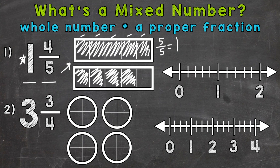Let's place this mixed number on a number line. We'll start by finding one whole, which is right here. Then we need the four fifths: one fifth, two fifths, three fifths, and four fifths. So we would place one and four fifths right here. You'll notice that we are in between two whole numbers, one and two.